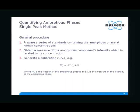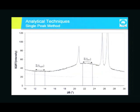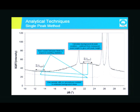The single peak method is simple: you prepare a series of standards containing the amorphous phase at known concentrations, obtain a measure of the amorphous component's intensity which is related to its concentration, and then plot a simple calibration curve. You will typically want to determine the background and the peak intensity over a couple of concentrations. What this gives you is the corrected intensity of your sample representing the amorphous content.